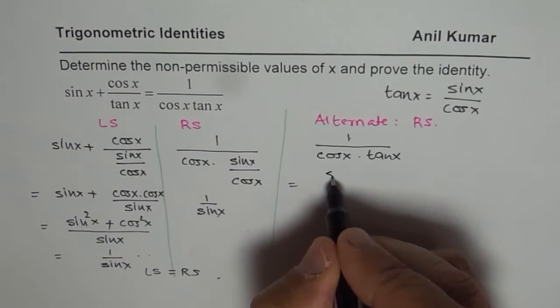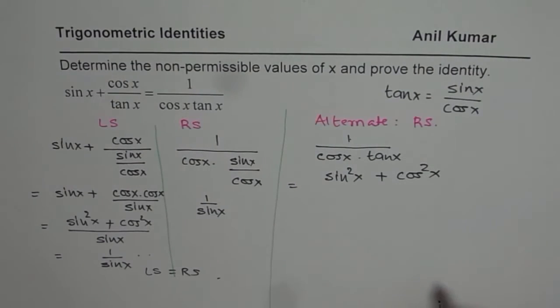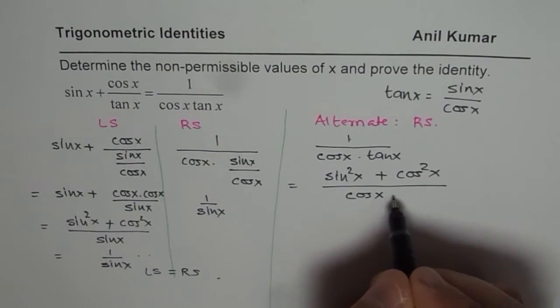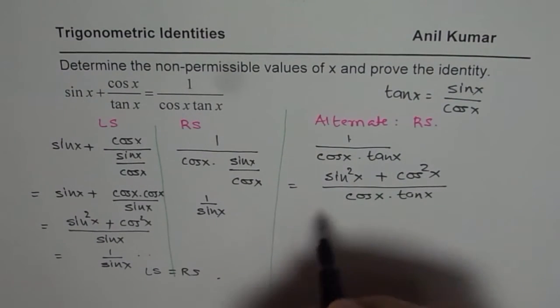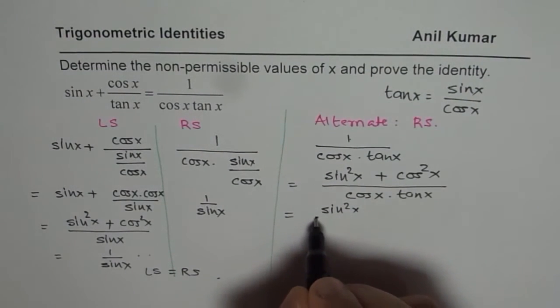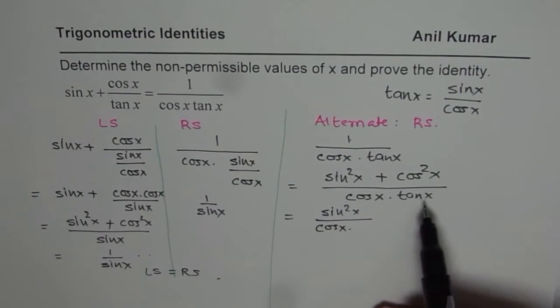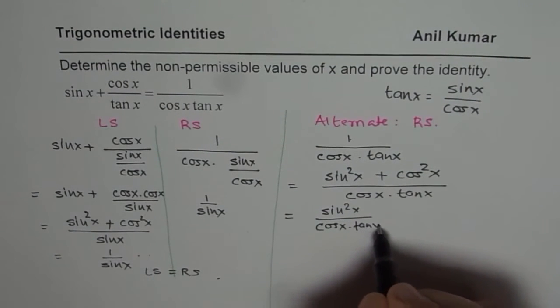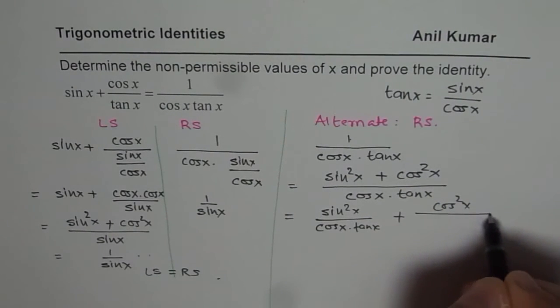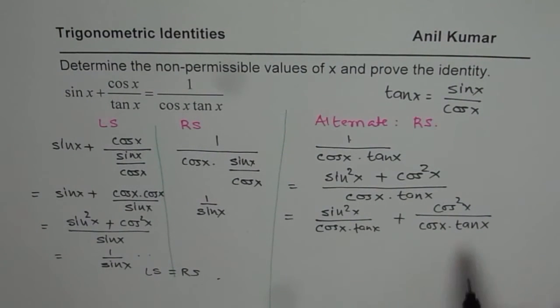So if I write the numerator 1 as sin square x plus cos square x, then what do we get? Then we get each term divided by cos x times tan x. So one term will be sin square x divided by cos x times tan x, and the other term is cos square x divided by cos x times tan x.